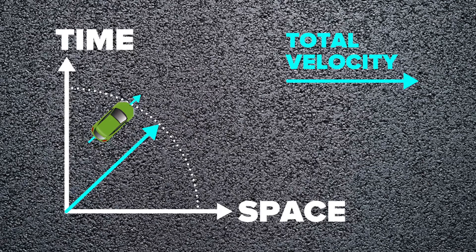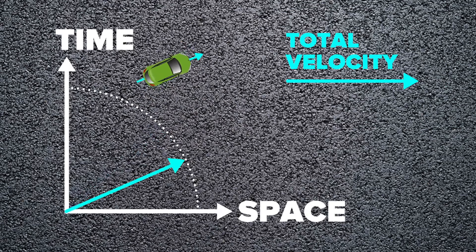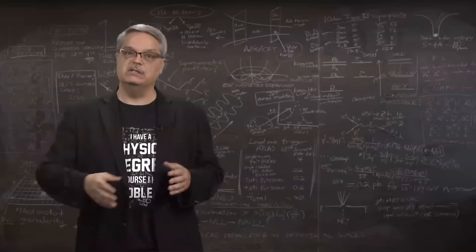On the other hand, what happens as you start moving through space? That's a fancy way to say that you gain some velocity. Well, we see here that what starts to happen is that as you begin to move through space, you move less through time. And eventually, when you move only through space, you don't move through time at all.